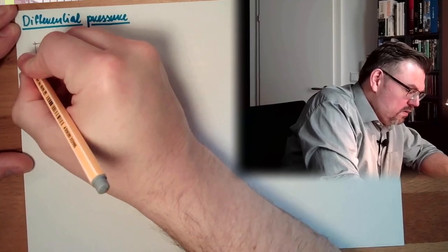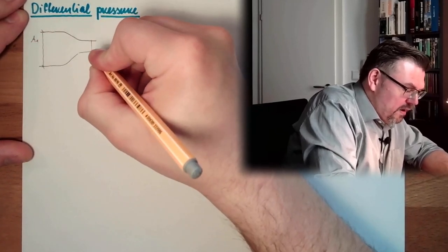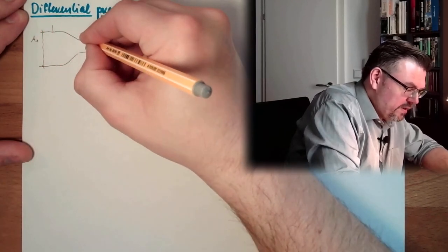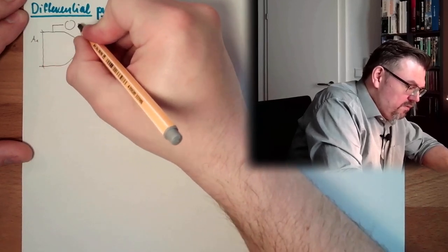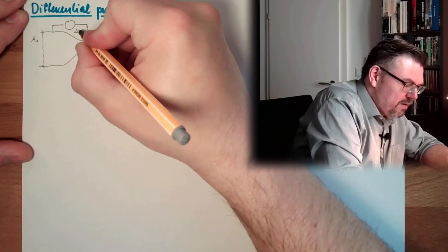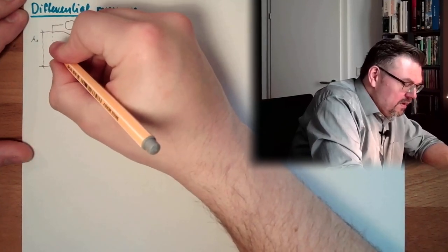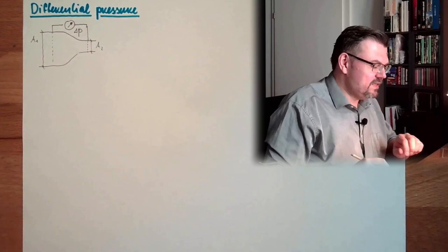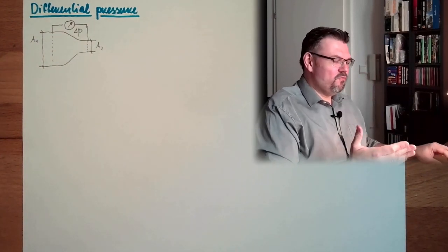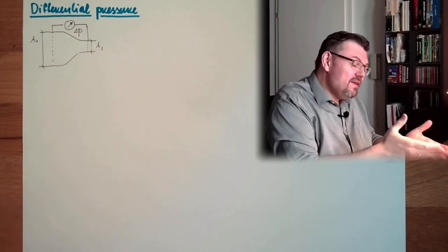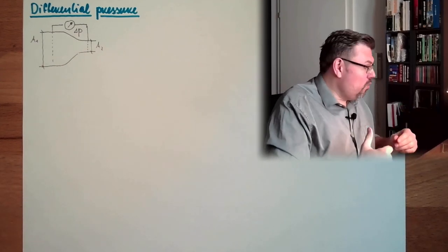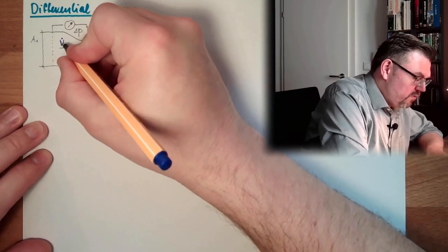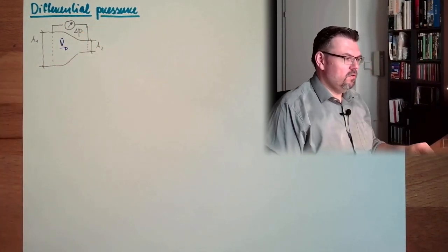We have here an A1, area 1, and here we have an area 2 size. And what I am actually measuring is the pressure difference between those two things. So I am measuring the delta P between this position and this position. And how does it work that I can realize from this delta P to the flow? Because actually what I want to know is the volume change per time point.